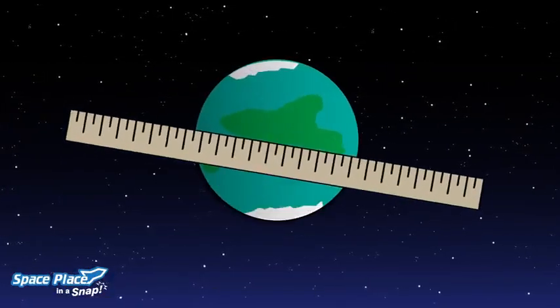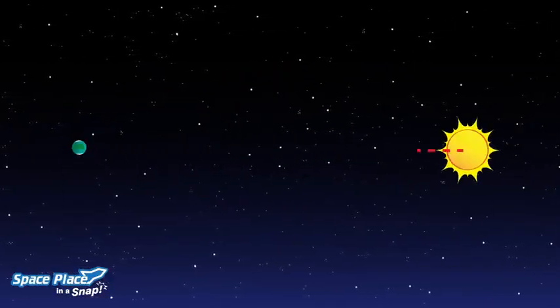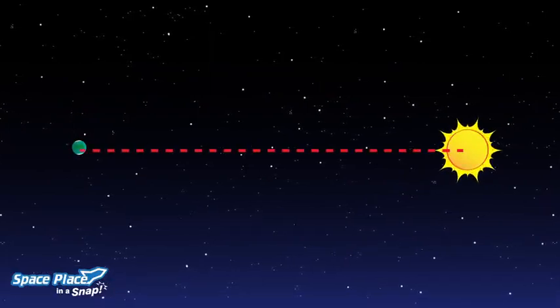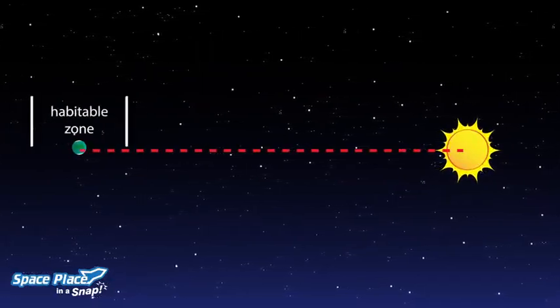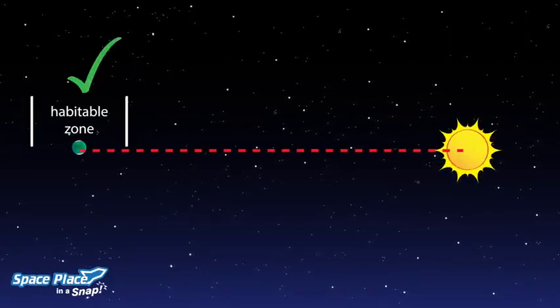Ones that are about the same size, that are just the right distance from their star. We call this distance the habitable zone. It's where the temperature of the planet would be similar to Earth.